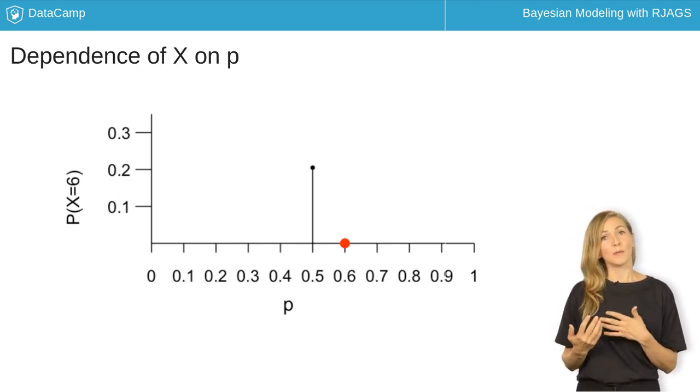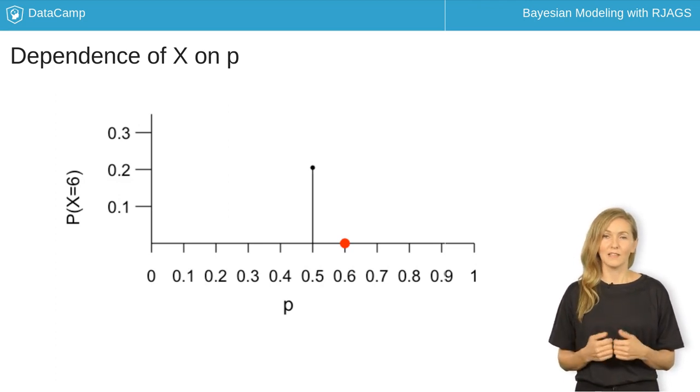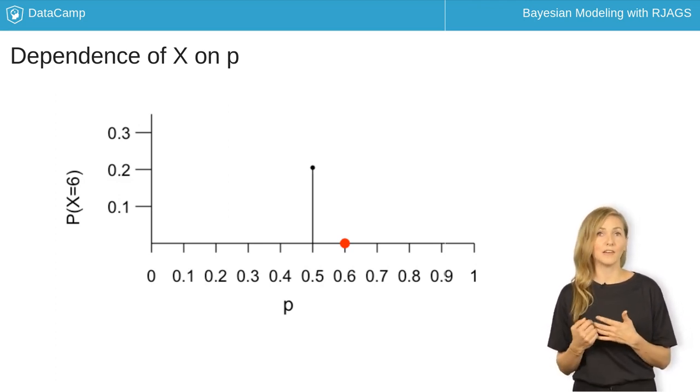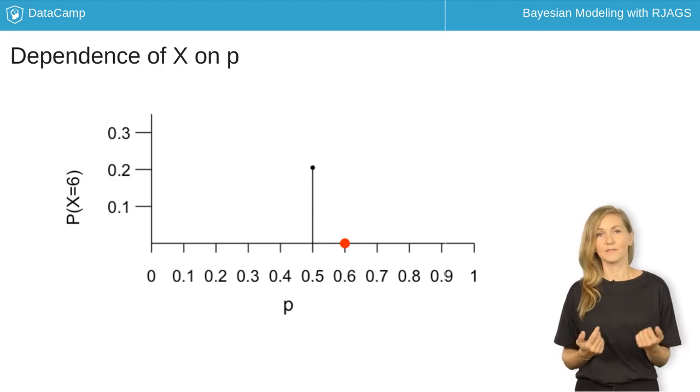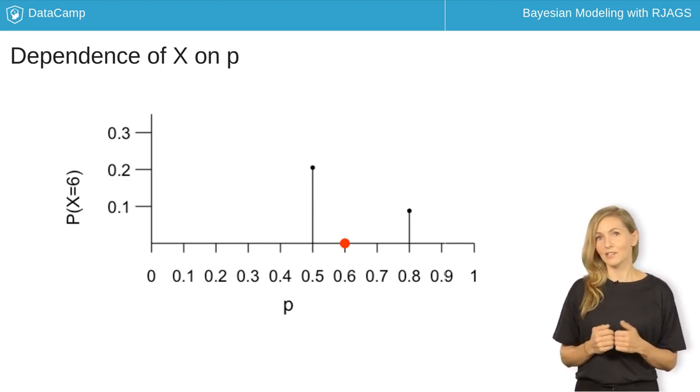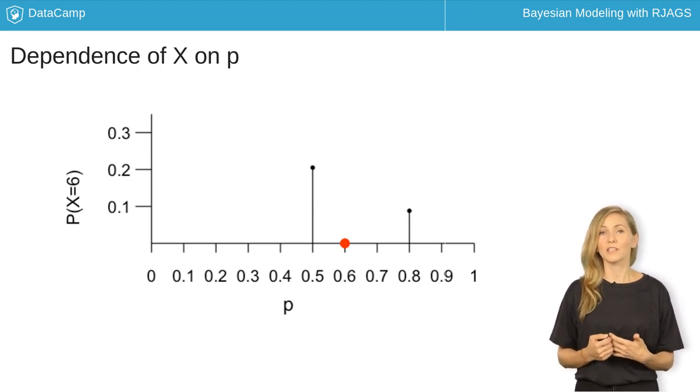If your underlying support p were only 50 percent, there's a roughly 20 percent chance that a poll of 10 voters would produce x equals 6. You're less likely to observe such a relatively low poll result if your underlying support p were as high as 80 percent.